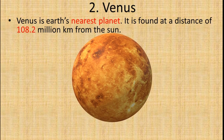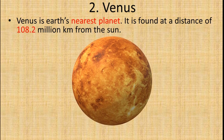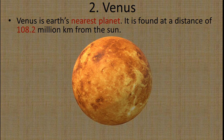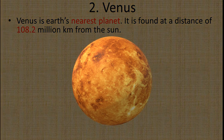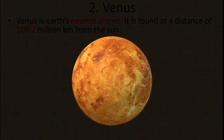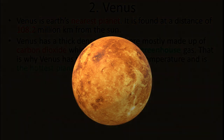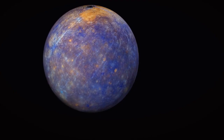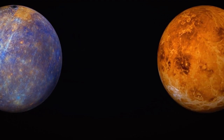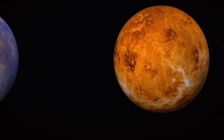Venus is found at a distance of 108.2 million kilometers from the Sun. Venus has a thick, dense atmosphere mostly made up of carbon dioxide, which is an effective greenhouse gas.